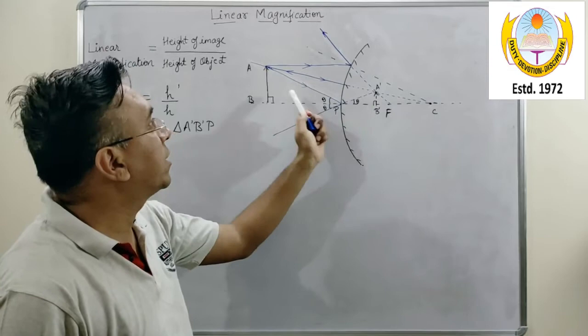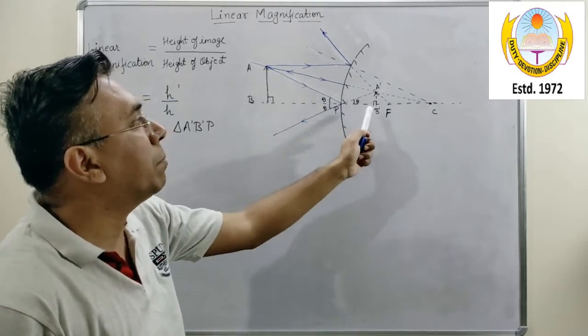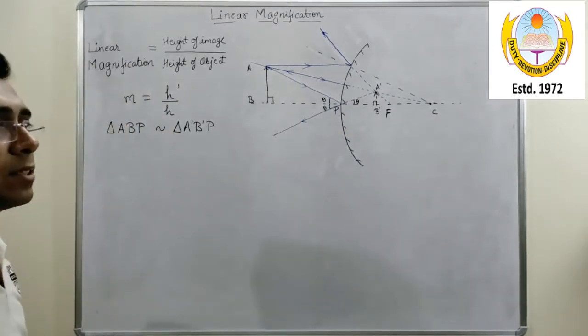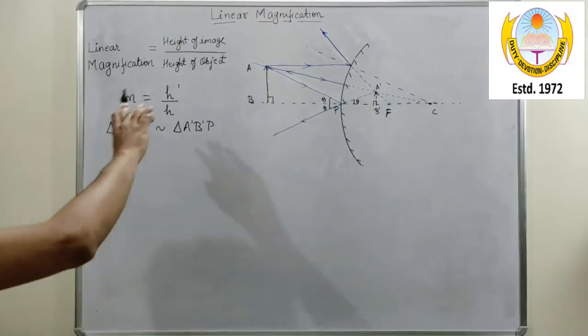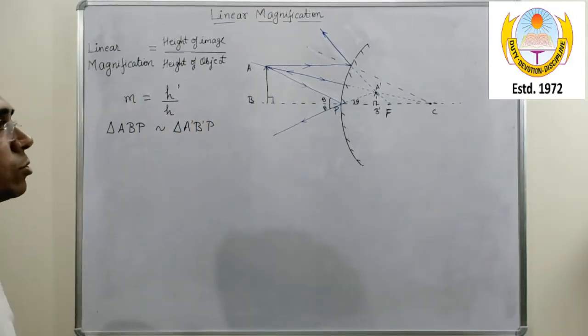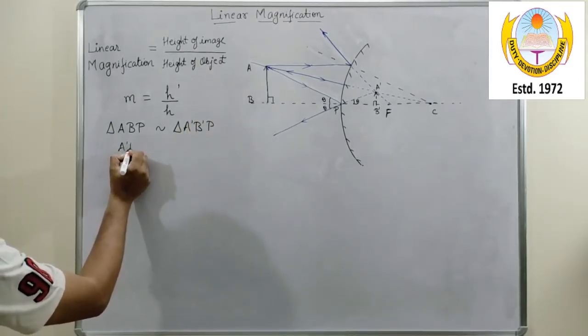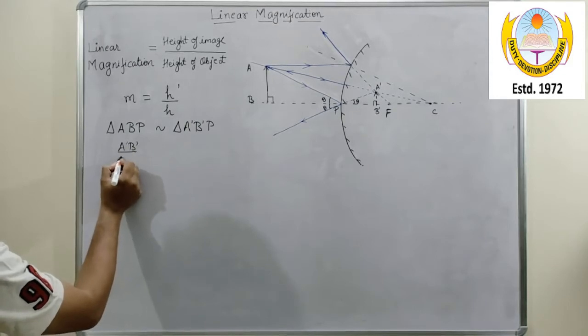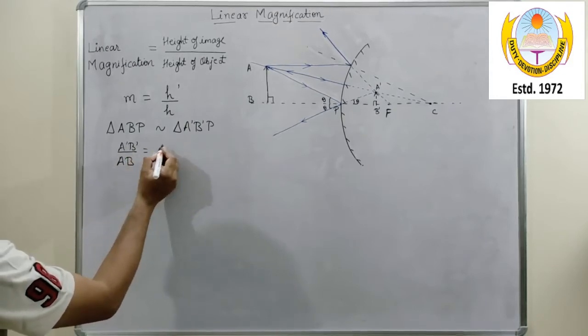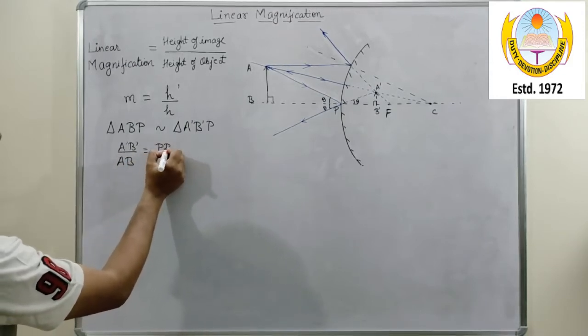So, this and this angle, that is angle ABP and angle A'B'P, will be the same. So we can write triangle ABP is similar to triangle A'B'P. And if I take the ratios of the sides, that is A'B' upon AB, this can be written as PB' upon PB.